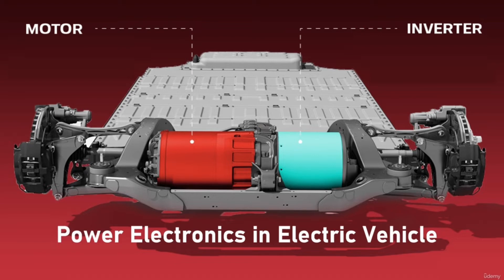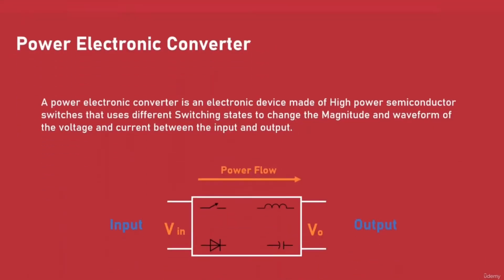Welcome back. In this lecture we will look at the basics of power electronics in electric cars. First we will look at what a power electronic converter is, then we will look at the different converter types based on whether the power is AC or DC, direction of power flow, and the presence of isolation.